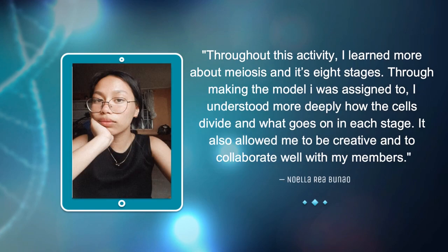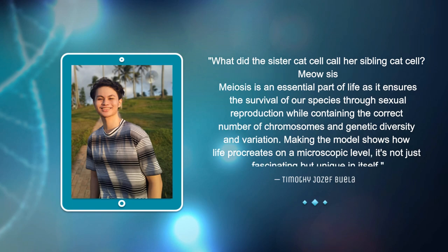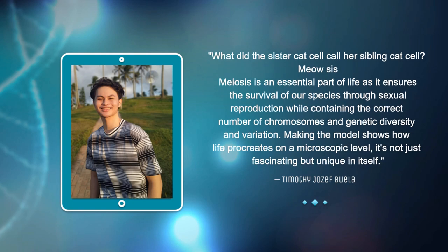Throughout this activity, I learned more about meiosis and its eight stages. Through making my assigned model, I understood more deeply how cells divide in each stage, and it allowed me to be creative and collaborate with my members. Our existence came from the very process of cell division; meiosis — occurring in sexually reproducing organisms — involves two stages of division and results in four cell replicas. This activity exhibited the stages of meiosis using our artistic skills and scientific capabilities, developing our craftsmanship and ability to portray what happens on a microscopic level.